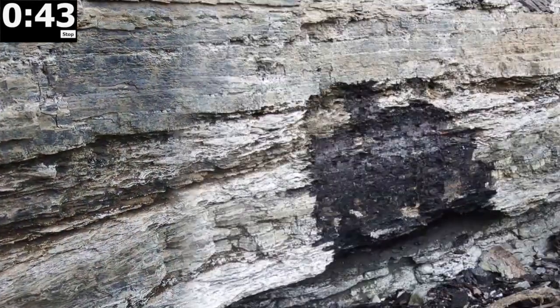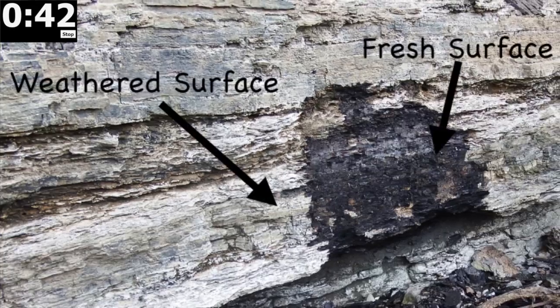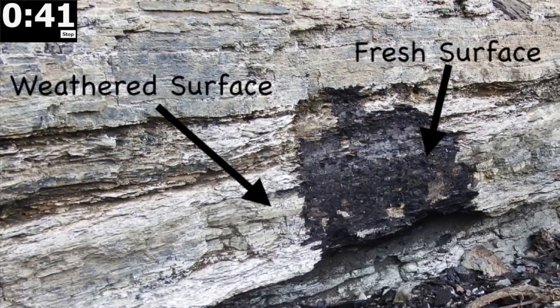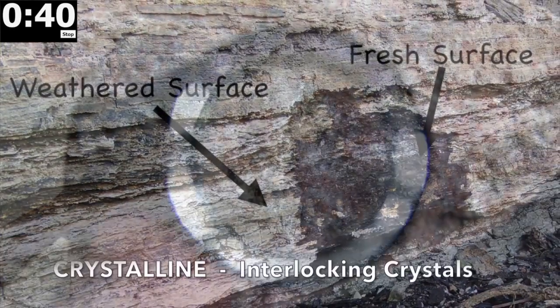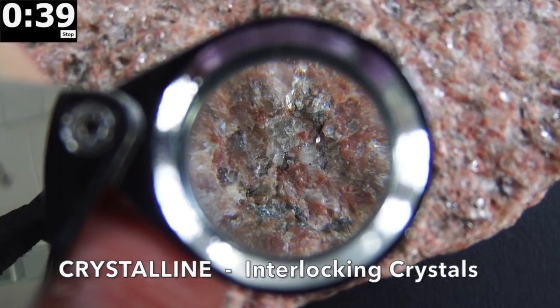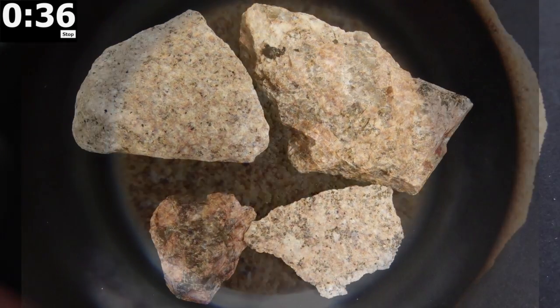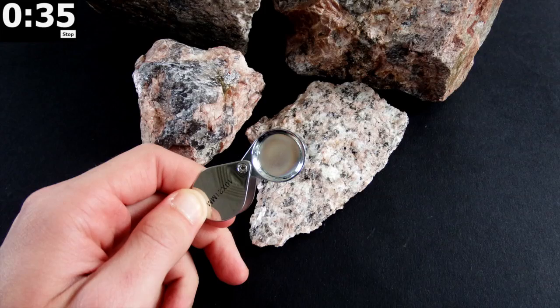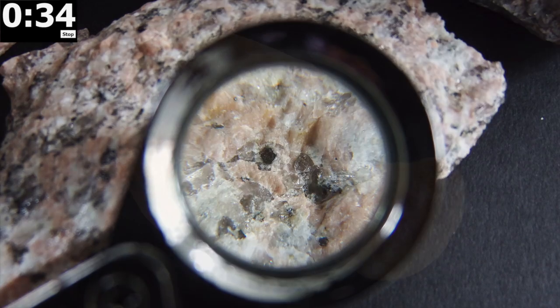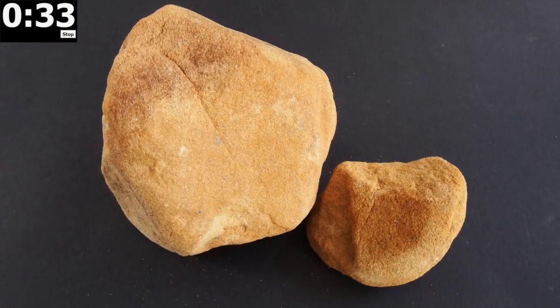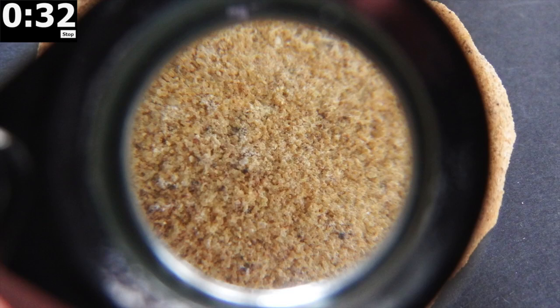So make sure you are always observing a clean face. You need to determine and note whether the rock is crystalline or granular. Igneous rocks such as these granites and pegmatites have interlocking crystals, while others such as sandstones have grains.